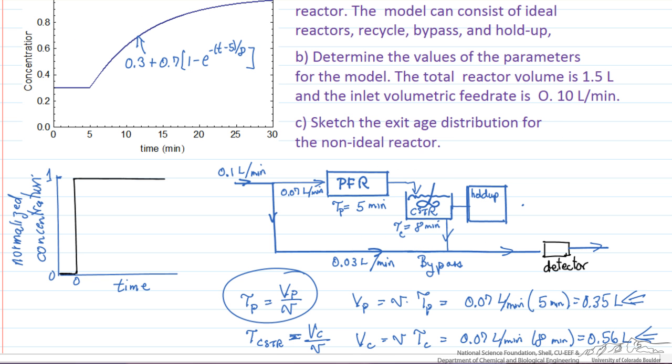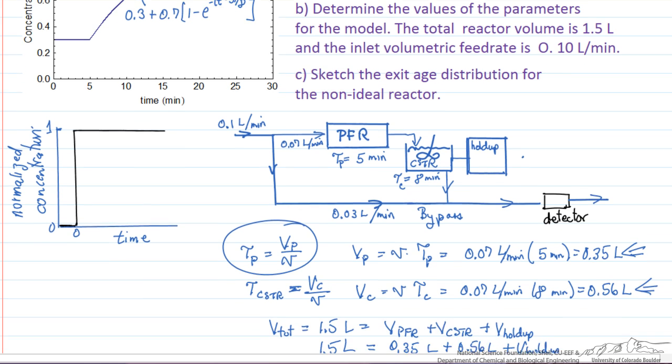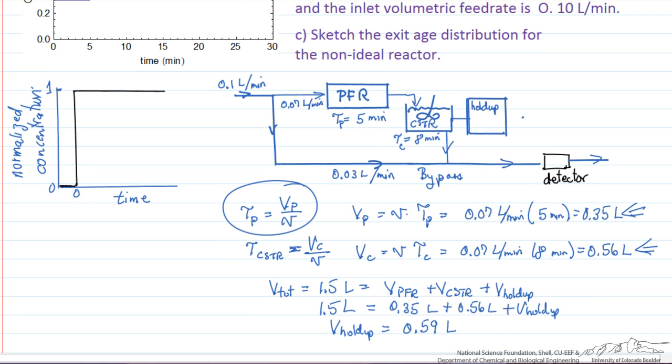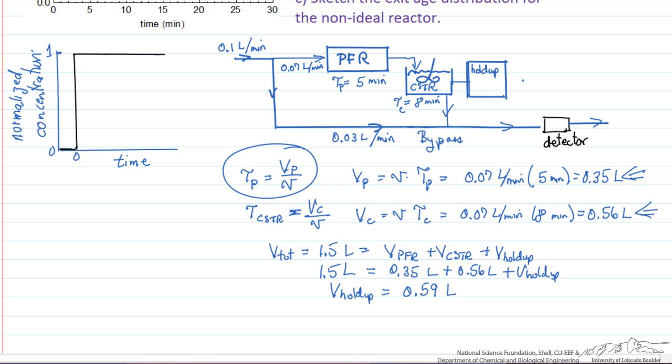The last part of the problem then is what is the exit age distribution, which is the same as asking for this system, what's the response to a pulse input?